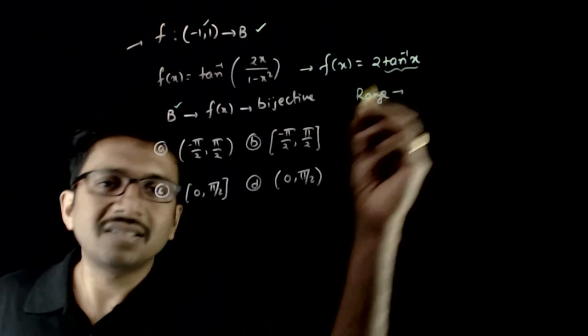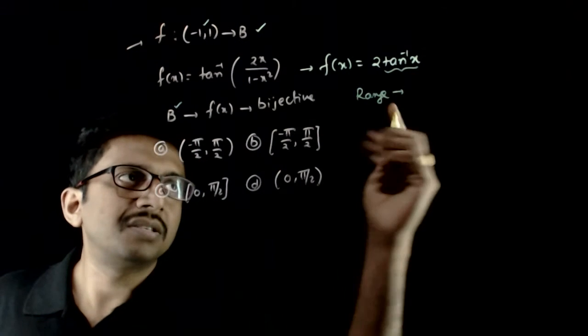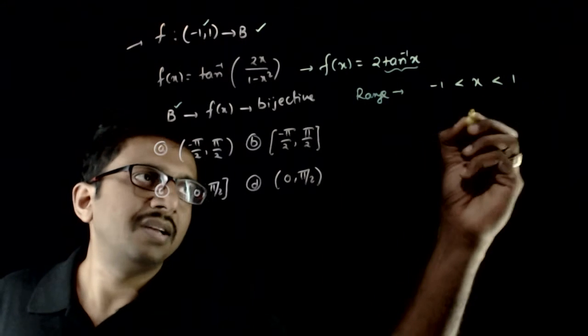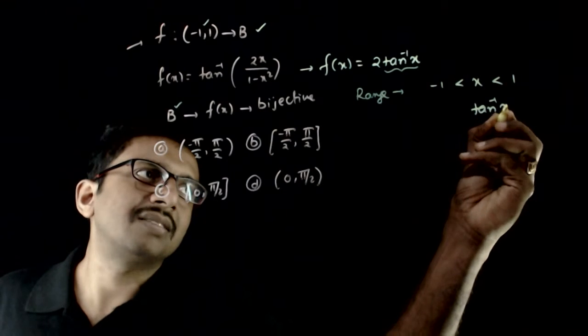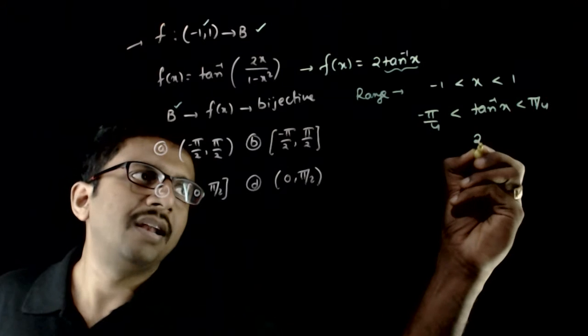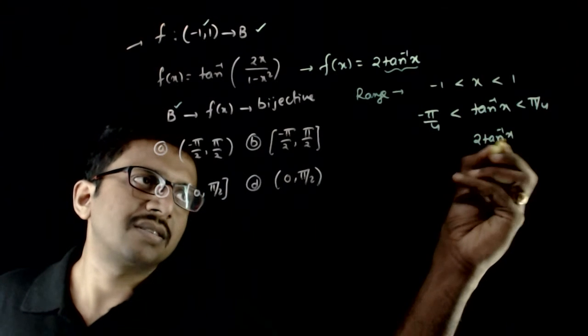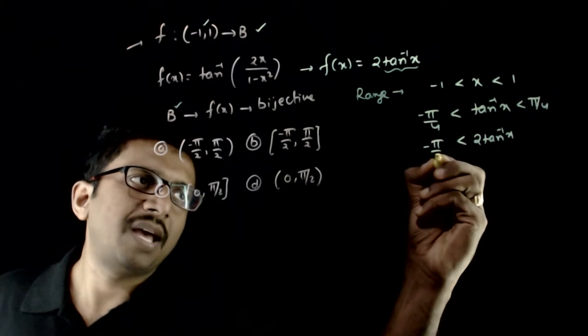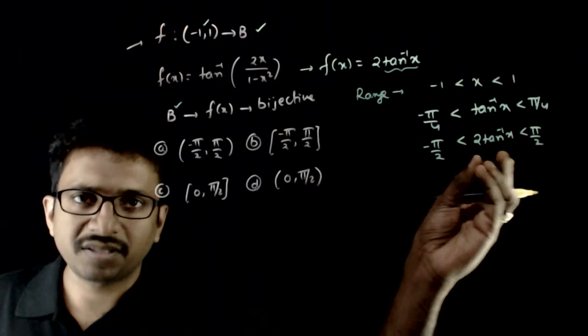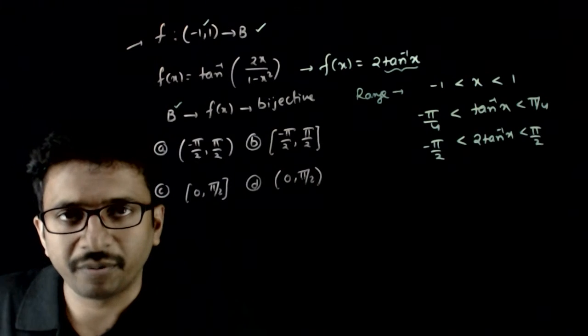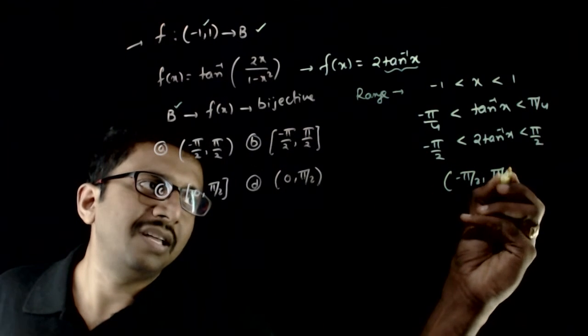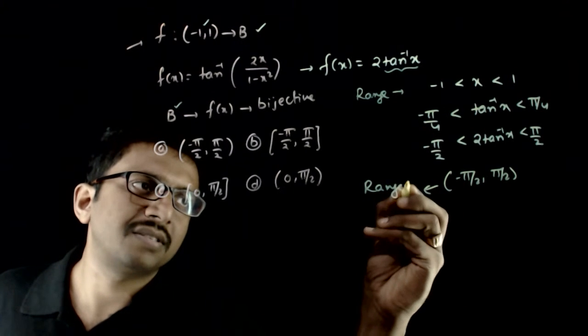We know that tan inverse x is an increasing function. So as x goes from minus 1 to plus 1, tan inverse x goes from minus pi by 4 to plus pi by 4, and 2 tan inverse x goes from minus pi by 2 to plus pi by 2. So 2 tan inverse of x goes from minus pi by 2 to plus pi by 2. So this minus pi by 2 to pi by 2 is the range of f of x.